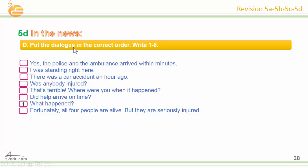Put the dialogue in the correct order, writing 1 to 8. Number two: there was a car accident an hour ago. Number three: that's terrible — where were you when it happened? Number four: I was standing right here. Number five: was anybody injured? Number six: fortunately all four people are alive, but they are seriously injured. Number seven: did help arrive on time? Number eight: yes, the police and the ambulance arrived within minutes.